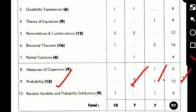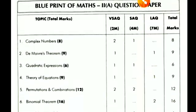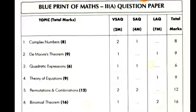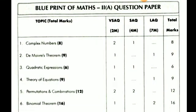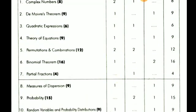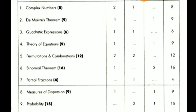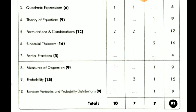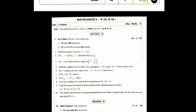The last topic is random variables and probability distribution, total weightage equals 9 marks. The problems are one 2-mark question and one 7-mark question. This is the weightage of the Maths 2A paper for Improvement 2022 to 2023. Also see the model paper — I am posting the Maths 2A model paper as well.